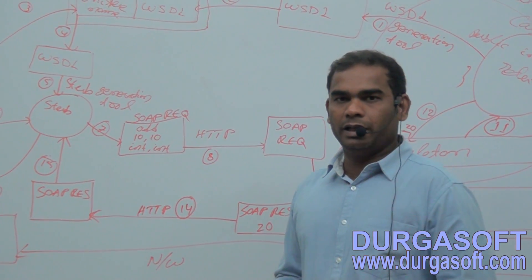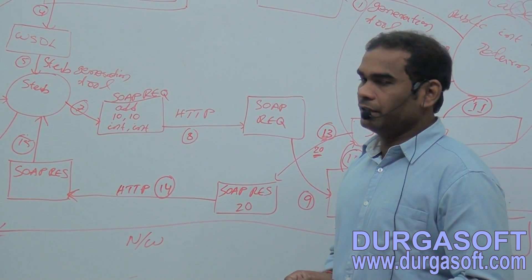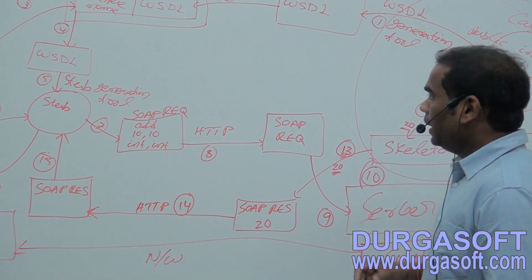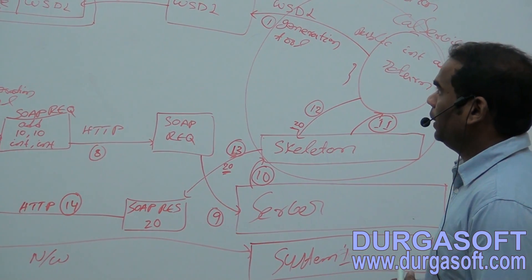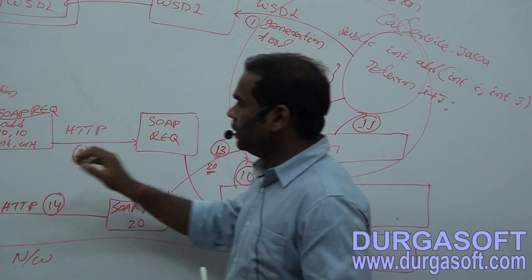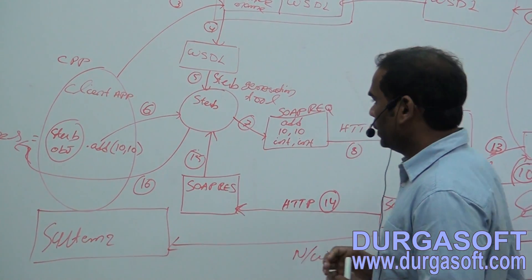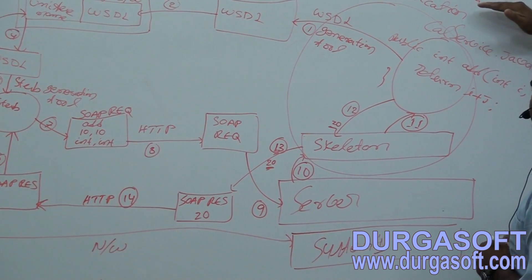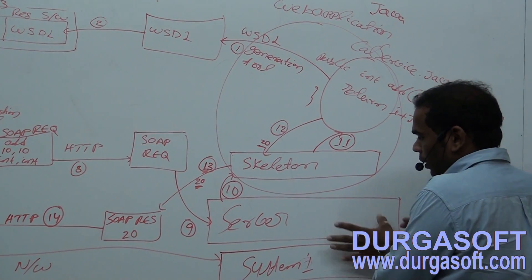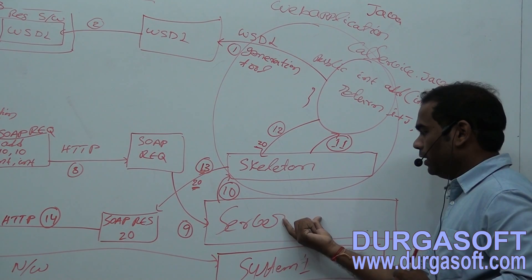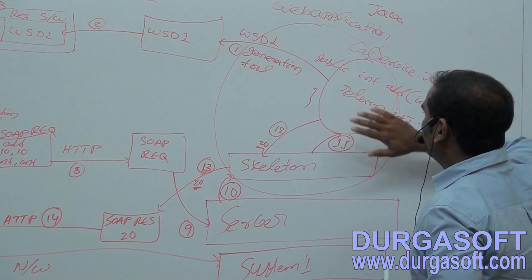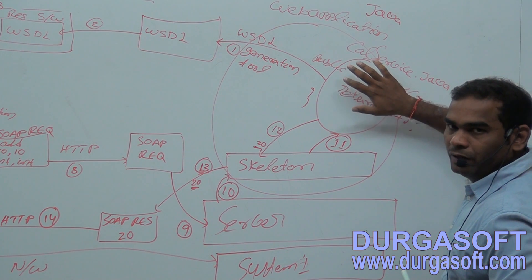In the last video we discussed web service architecture. Now we will again discuss some high-level points. This is your web service and this is your client application. Assuming we want to develop this web service using Java language. On top of system one, a web server or application server is running, and on top of this we need to create one web application. In this web application we need to create a service class, which is invoked by the client.